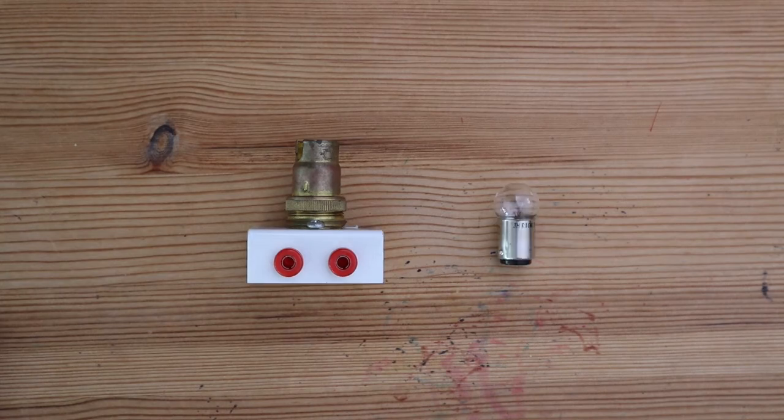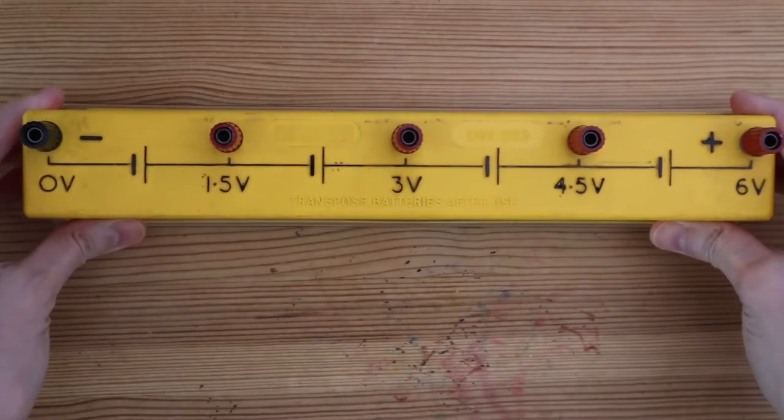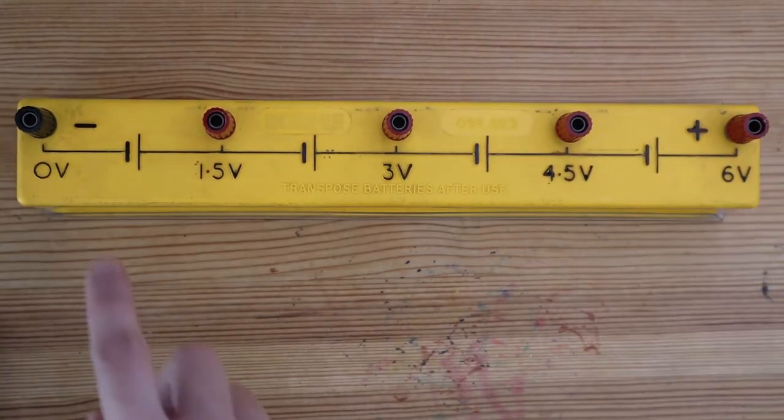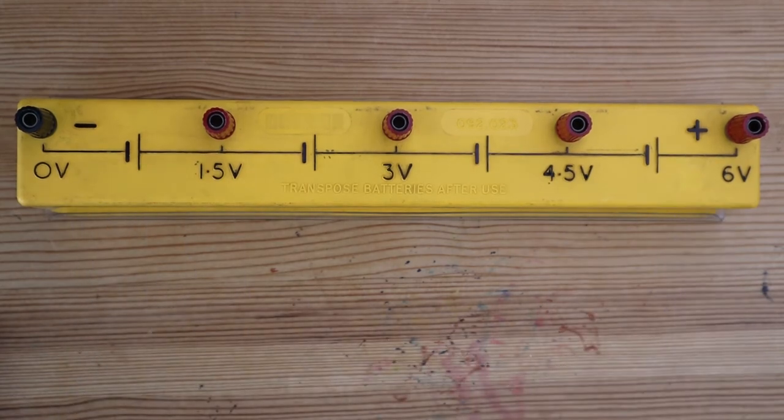To build this circuit, you need a lamp, some leads and a battery. I'm going to use a battery pack that allows me to select a voltage up to 6 volts.